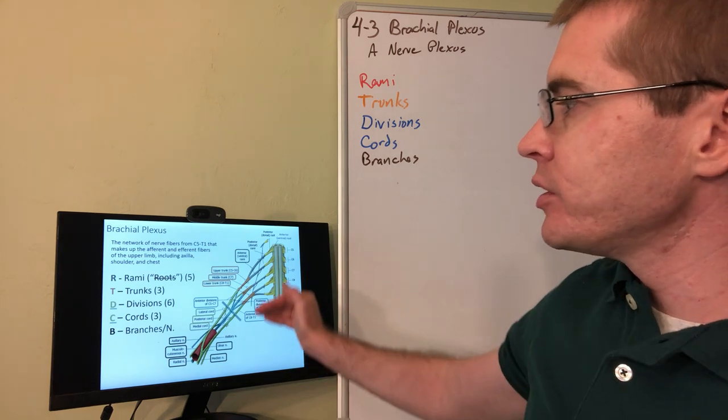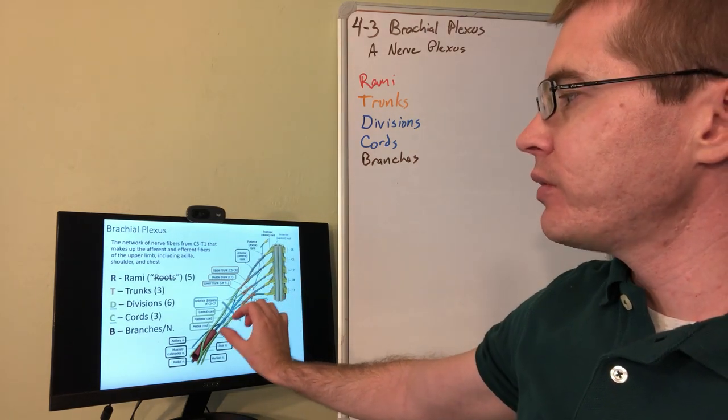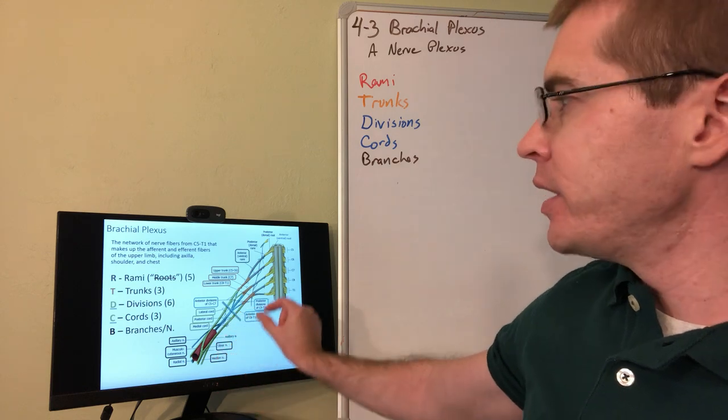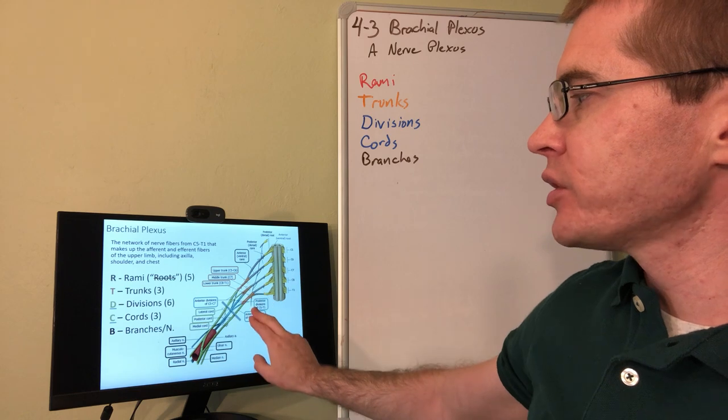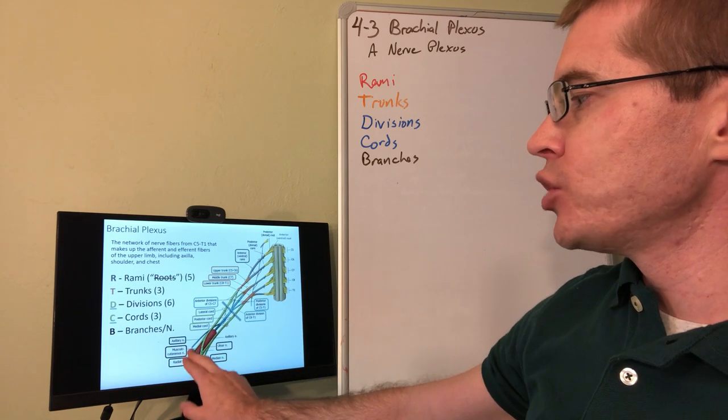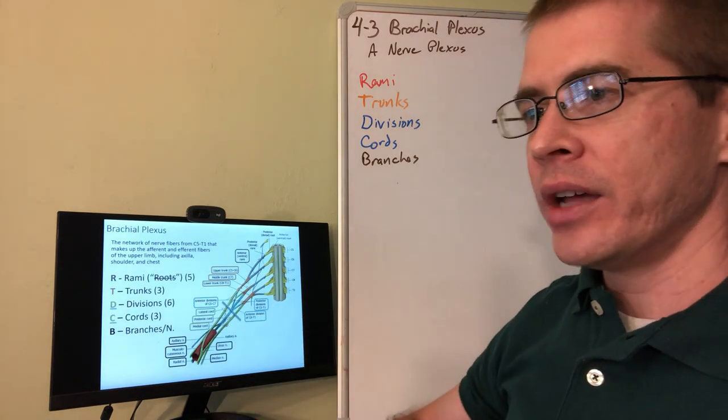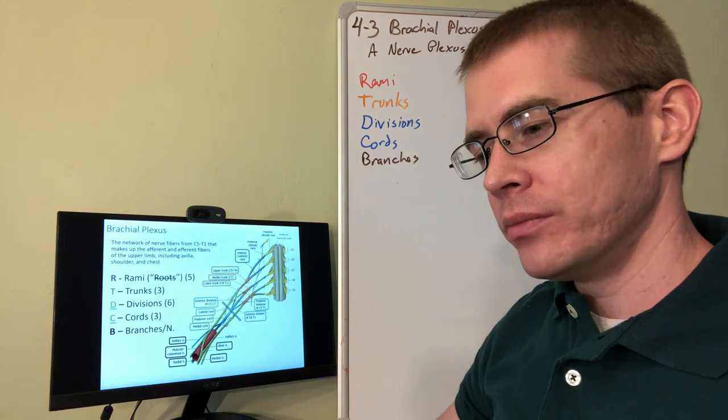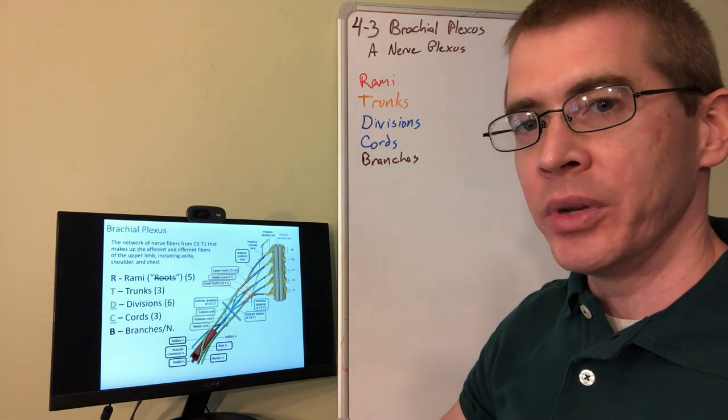So let's keep moving on. We divide up the brachial plexus into five different regions. These different regions are the rami, the trunks, the divisions, the cords, and then the individual terminal branches. So the way to remember this, I learned the mnemonic, the memory aid: Randy Travis drinks cold beers.